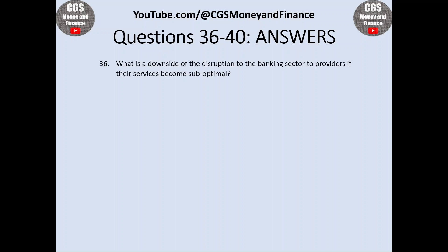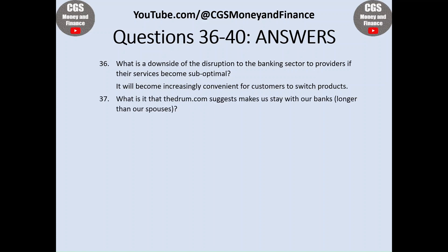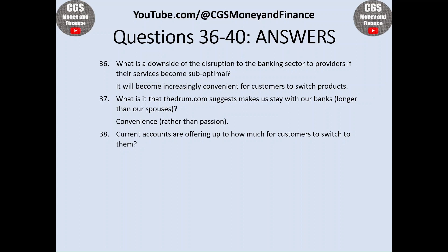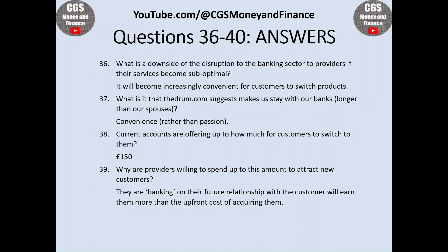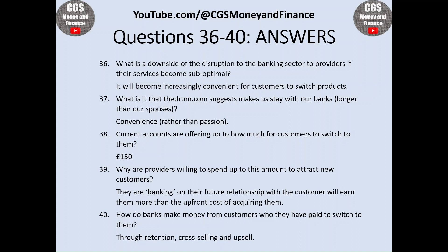Question thirty-six: if services become sub-optimal, it will become increasingly convenient for customers to switch accounts and products. Question thirty-seven: the drum.com suggests convenience rather than passion makes us stay with our banks longer than our spouses. Question thirty-eight: current accounts are offering up to £150 for customers to switch. Question thirty-nine: providers are banking on their future relationship with the customer earning them more than the upfront cost of acquiring them. Question forty: banks make money through retention, cross-selling and upselling.